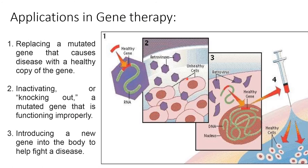Retroviral vectors can be used for gene therapy. In gene therapy, replacing a mutated gene that causes disease with a healthy copy of the gene can be done. Inactivation or knocking out a mutated gene that is functioning improperly can also be done. Additionally, the introduction of a new gene into the body to help fight a disease is possible. By removing the viral protein-coding genes, we can use the retrovirus for gene therapy purposes.